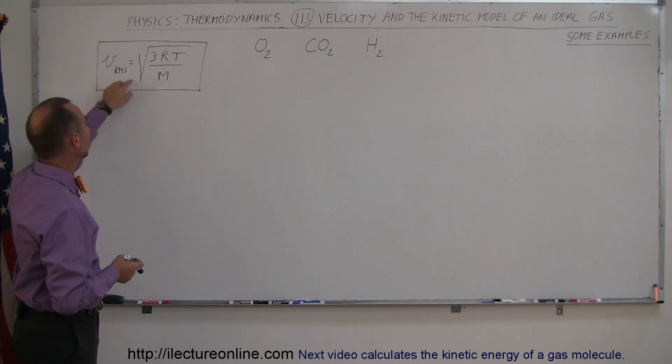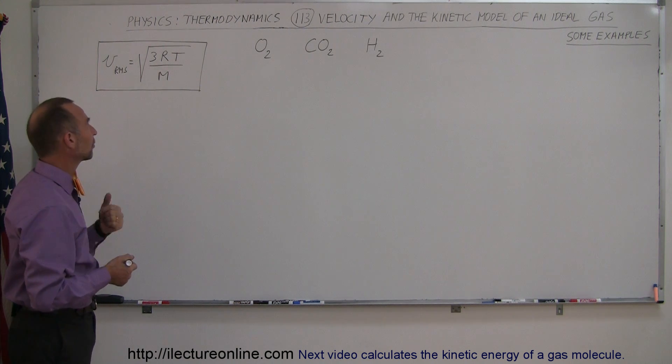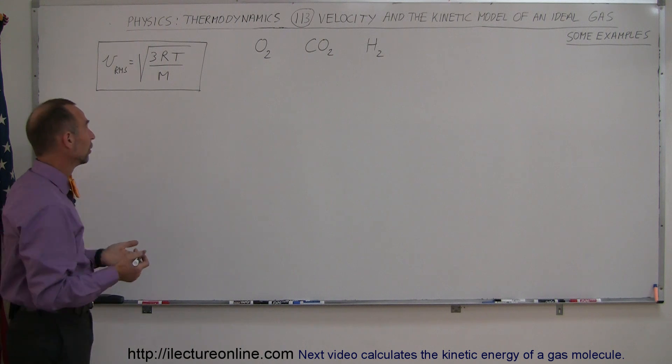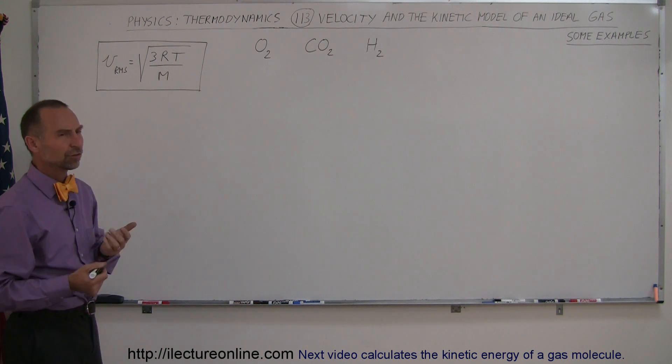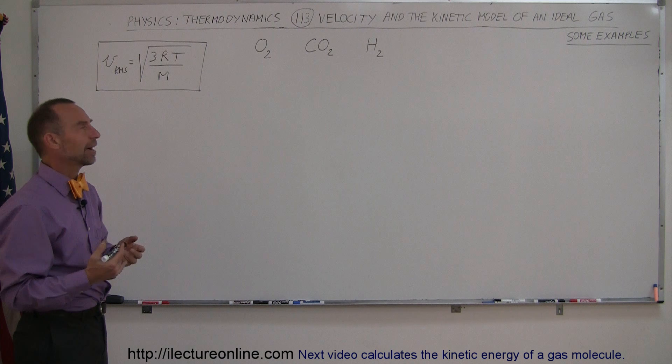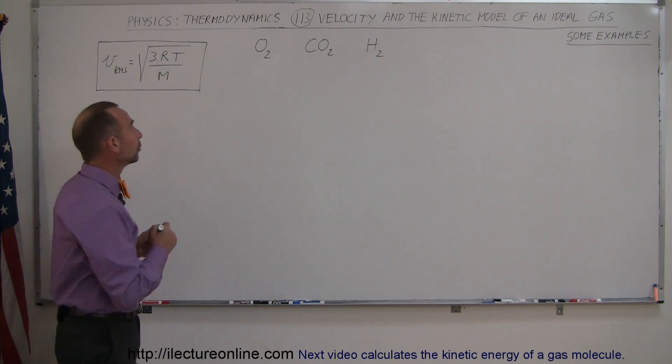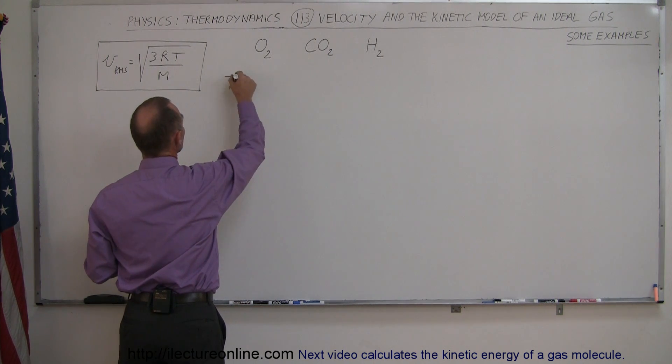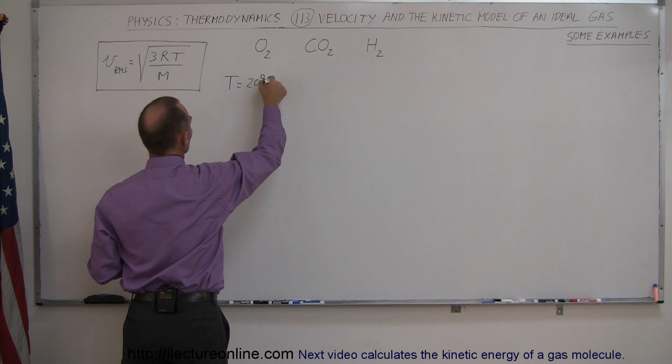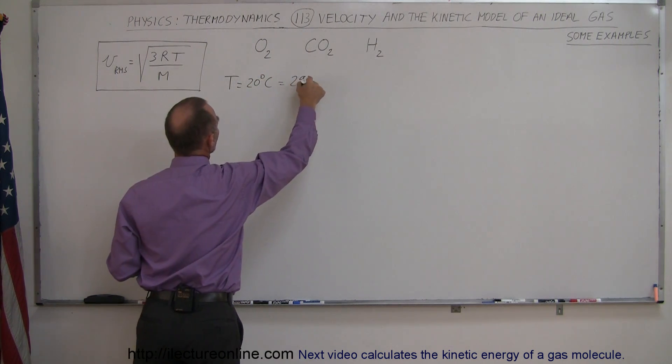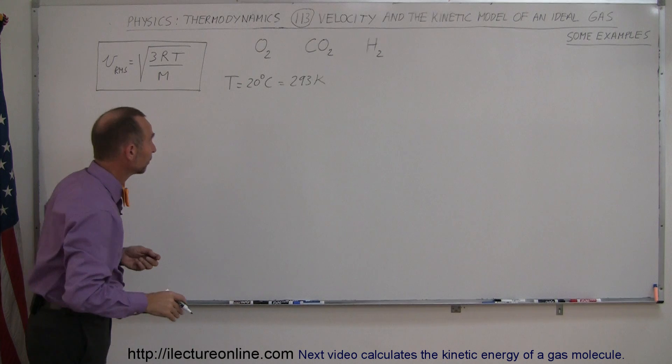Here's the equation: vRMS is equal to the square root of three times the gas constant times the temperature divided by the molar mass. Let's say we want to find the velocity at room temperature. T is equal to 20 degrees centigrade, which would be 293 kelvin. We have to convert the temperature always to kelvin.